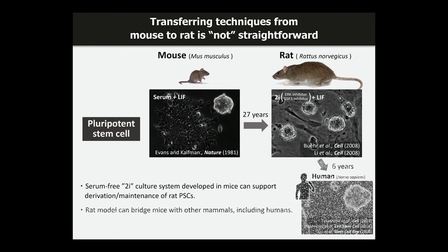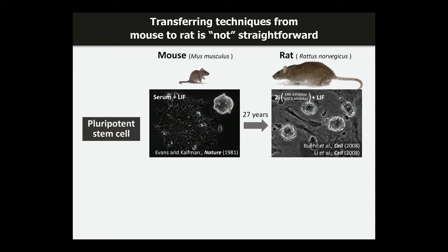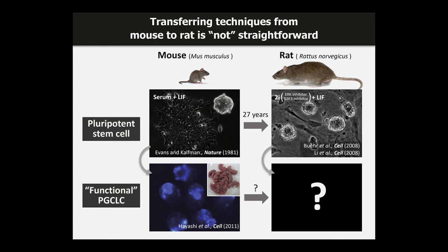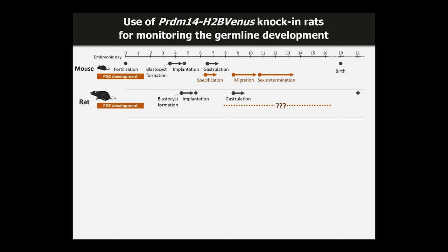Importantly, when establishing pluripotent stem cells in humans — similar to the pre-implantation epiblast stage — we also need to use a similar stringent culture condition developed in rat. So the rat model can bridge mice with other mammals including humans. The question is simple: whether we can induce functional PGCLCs in rat, as was achieved in mouse about 10 years ago. Compared with mice, we don't have a lot of information about rat germline development, so we first investigated it using a reporter system.